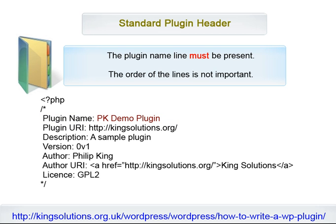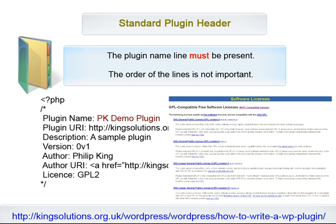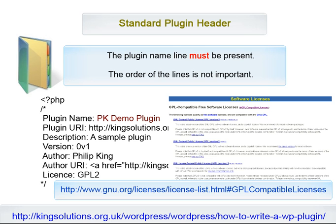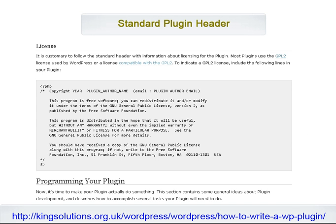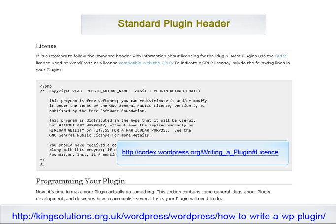The license slug should be a short common identifier for the license the plugin is under, usually GPL2, and is meant to be a simple way of being explicit about the license of the code. It's customary to follow the standard header with information about licensing for the plugin. As stated, most plugins use the GPL2 license used by WordPress, or a license compatible with GPL2. To indicate a GPL2 license, just include the standard license declaration in your plugin. This can be found at the WordPress codex.